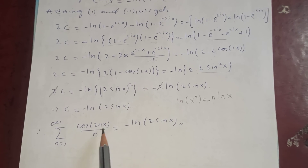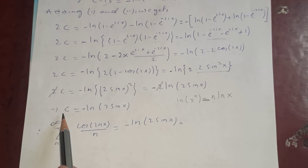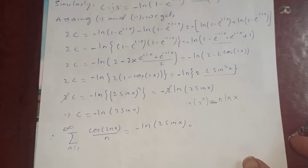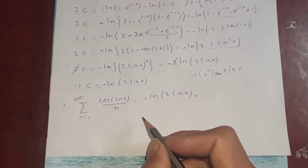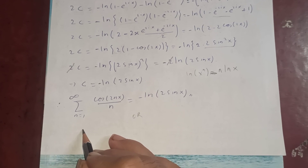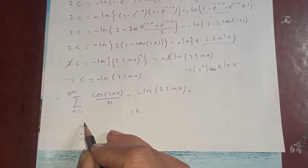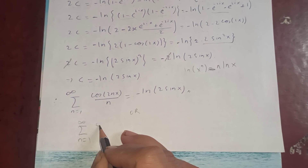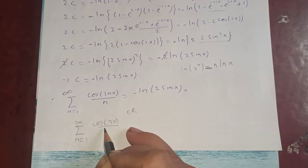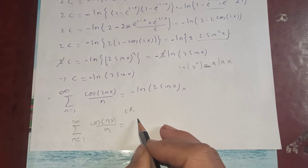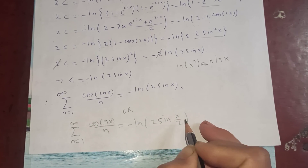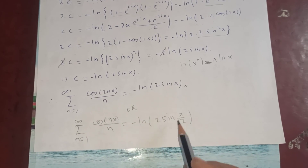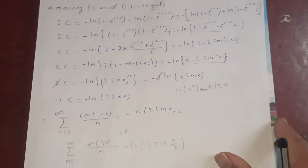Therefore our summation: the sum from n=1 to infinity of cos(2nx)/n equals minus log(2sin(x)). We were interested in finding C, and this is the result. For S (the sine series) you can subtract the equations similarly. Also, for the sum without the 2, sum of cos(nx)/n, it's just minus log(2sin(x/2)) by replacing x with x/2.